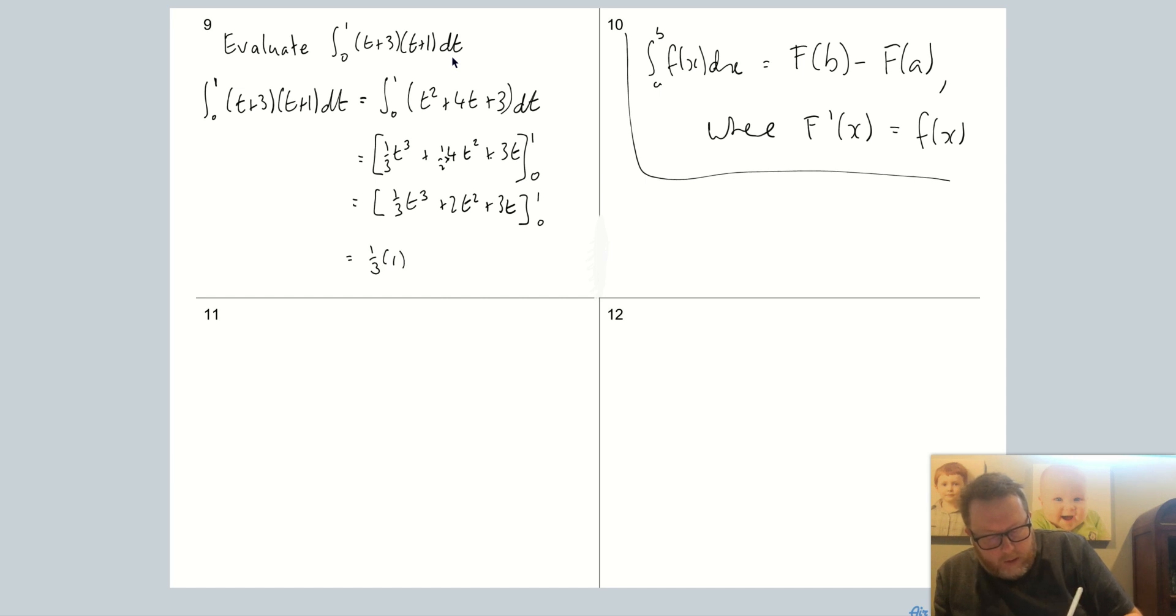So that's equal to (1/3) multiplied by 1³ plus 2 multiplied by 1² plus 3 multiplied by 1, minus, and I'm going to use my brackets here because it's so easy to make silly mistakes if you don't forget to put your brackets in. In this case it's pretty boring though: 0³, sorry, (1/3) times 0³ plus 2 times 0² plus 3 times 0, closed brackets. So that's the fundamental theorem of calculus. Okay, so if I just color code a little bit, we've got F(b) and there's F(b) there, and then we've got F(a) and then there's a there.